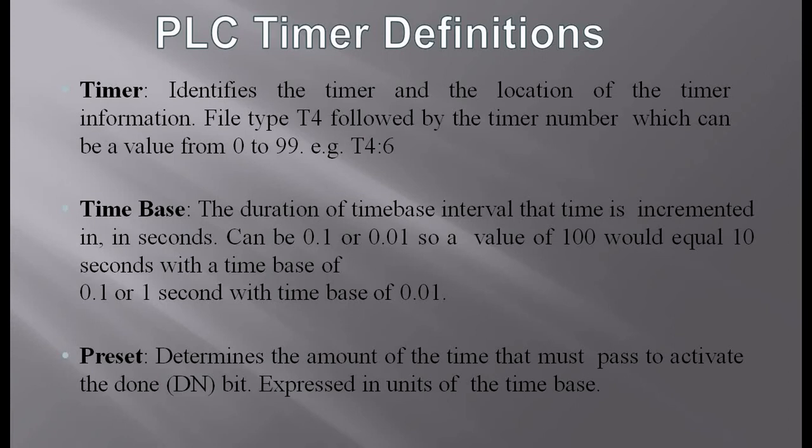To designate a timer, an example is T4:6, meaning timer number six. We can go from T4:0 to T4:99 — total 100 timers can be implemented. Then comes the time base: the duration of the time base interval in which time is incremented, in seconds. It can be 0.1 or 0.01.